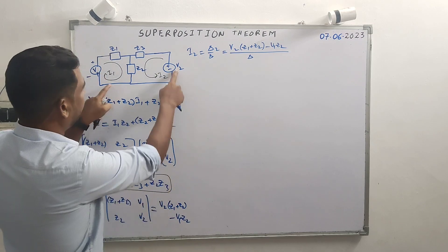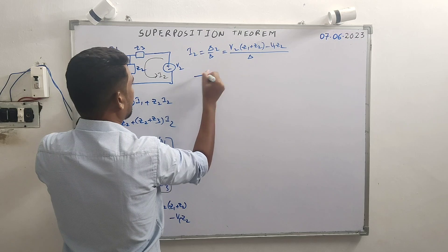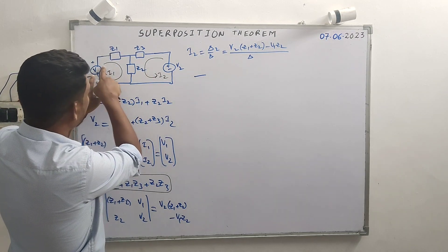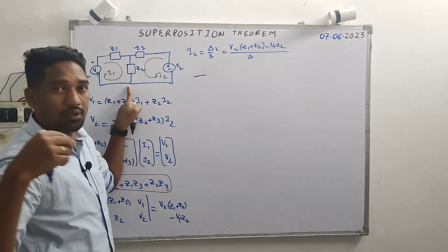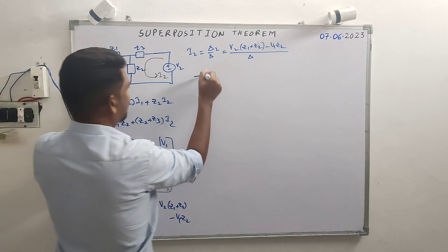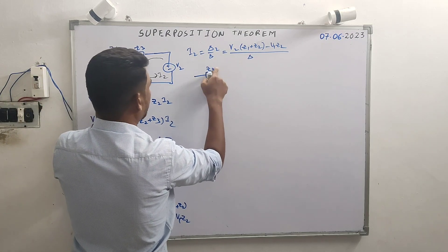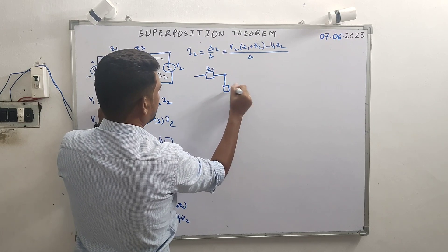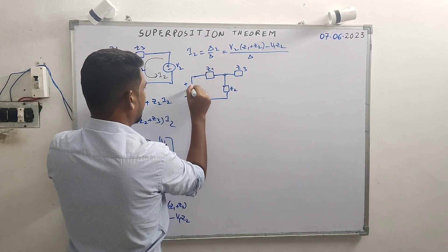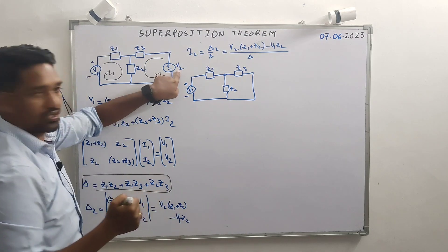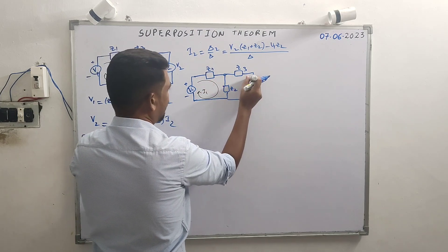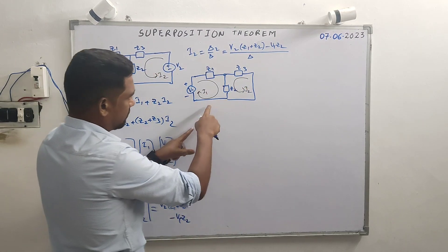Now, to prove the superposition theorem, redraw the auxiliary circuit. We apply each voltage source individually. First, set V2 equal to zero, and find i2. Redraw the circuit with Z1, Z2, Z3 and V1 only, with V2 set to zero. Loop currents i1 and i2 still flow as before — let's evaluate i2.